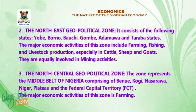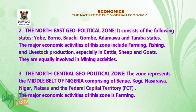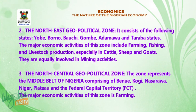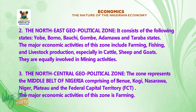Number two, the north-east geopolitical zone. It consists of Yobe, Borno, Bauchi, Gombe, Adamawa, and Taraba State. The major economic activities of this zone include farming, fishing, and livestock production, especially cattle, sheep, and goats. They are equally involved in mining activities.